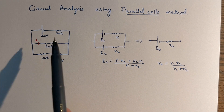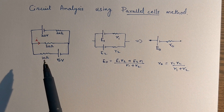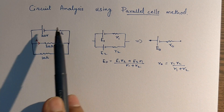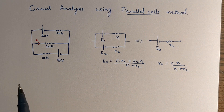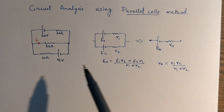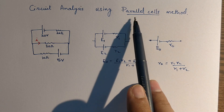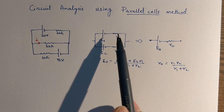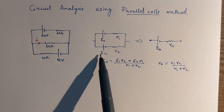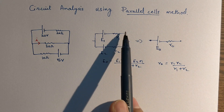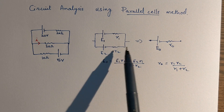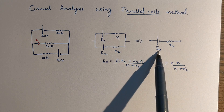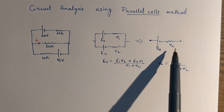We've already seen circuit analysis using two methods — the nodal method and the loop method — and we've done this example using both. Now I'm taking the same example and trying it with another method which I call the parallel cells method. Here I'll be using two batteries connected in parallel, with their EMF and internal resistance given, and these two batteries can be written as an equivalent battery with E-naught and R-naught.